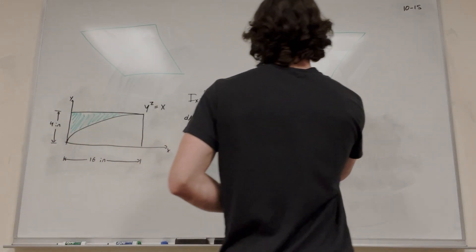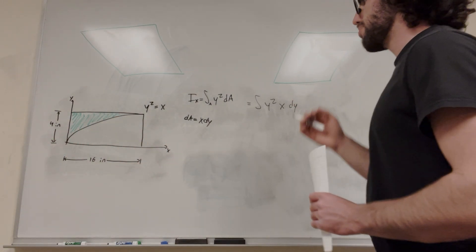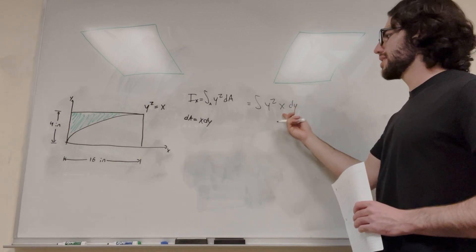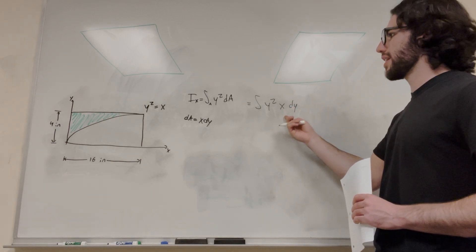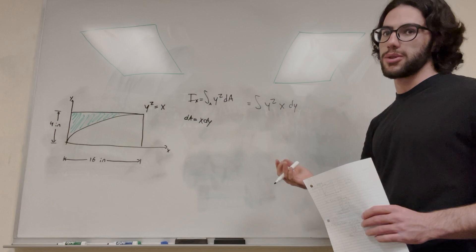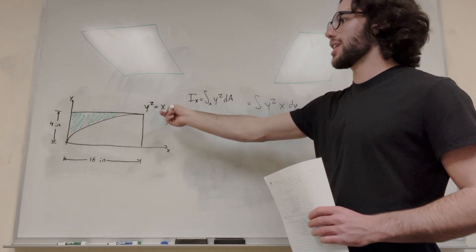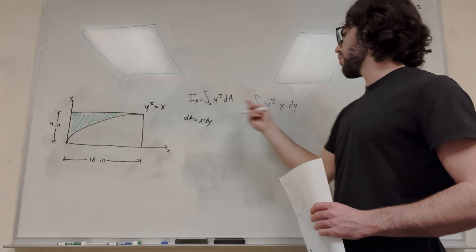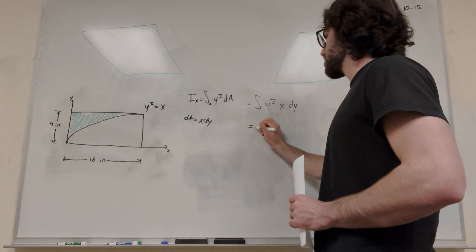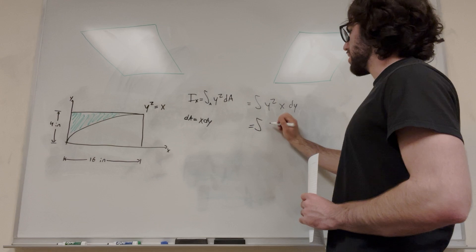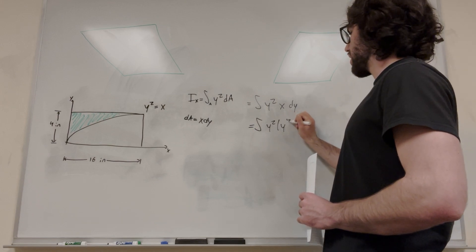We already have the integral, so we can just write an x here. But then we have an issue where this x does not match the dy. We want to make sure we only have one term when we integrate. So conveniently, we have y squared equals x here. We can just plug in y squared for the x in this integral, and it's going to be equal to y squared dy.